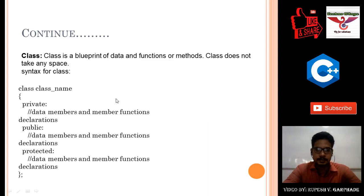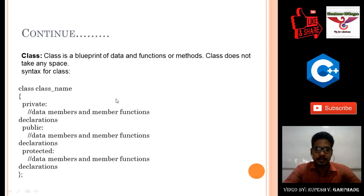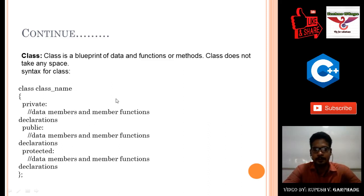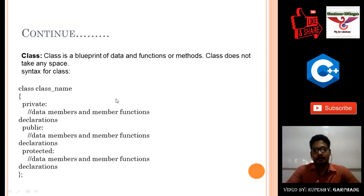Some access specifiers are available in object oriented programming: private, public, and protected. Data members like name and id, and member functions like get details, can be declared with these specifiers. Public means accessible everywhere, private means accessible only within the class, and protected is used for inheritance to provide security.